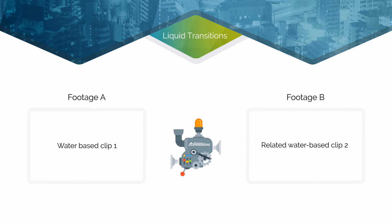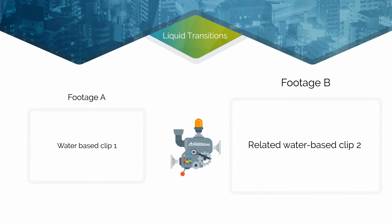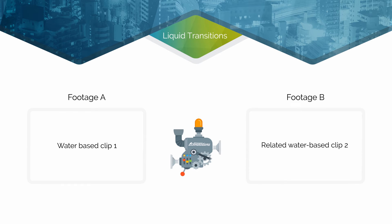So from the name Liquid Transition, you can already deduce and predict that this transition will consist of a liquid-like motion, meaning a natural flow movement transition between any two clips for a natural but creative look. Since liquids flow in different ways and at different speeds, this category offers enough variations to the liquid flow, making it a versatile category.